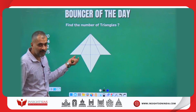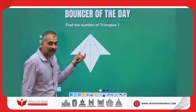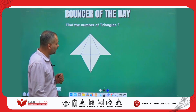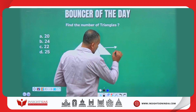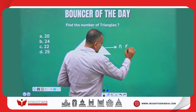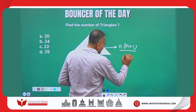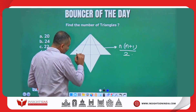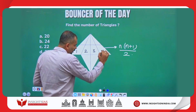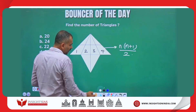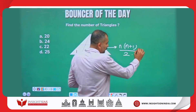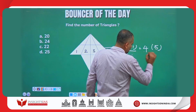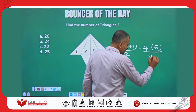A very similar figure — I have shown you in the previous video how to count the number of triangles. The formula is n(n+1)/2, where n stands for the number of smaller triangles, which are 4 in number. So n value is 4, n+1 is 5, divided by 2.